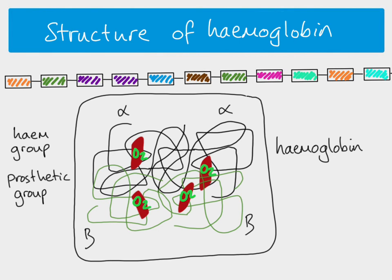This means that one haemoglobin molecule is able to transport a maximum of four oxygen molecules. Haemoglobin, as an example of globular proteins, tends to be water-soluble, and it has this spherical three-dimensional shape. It's quite unstable compared to a fibrous protein — there are lots of ionic bonds and hydrophobic interactions as a result of the R groups. In terms of the function of globular proteins, they tend to have metabolic functions. For example, enzymes are all globular proteins, hormones are often globular proteins, antibodies — and of course here we have our haemoglobin example.